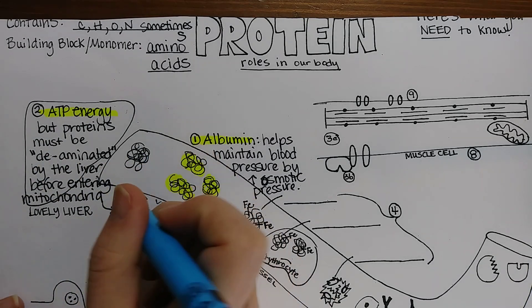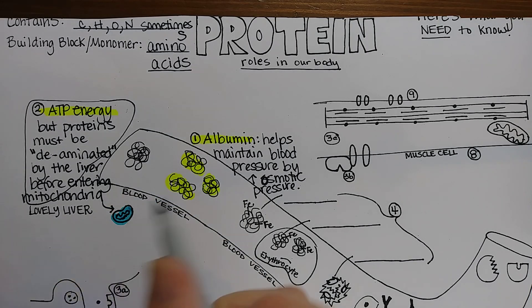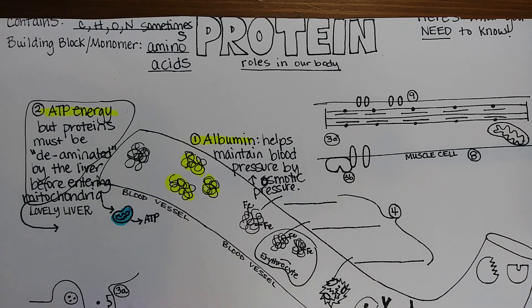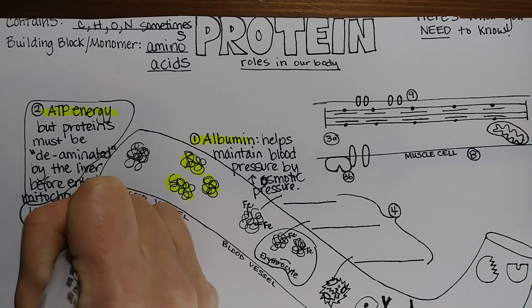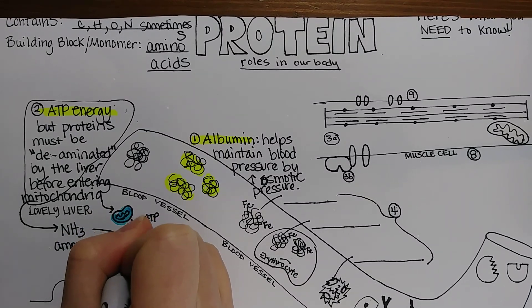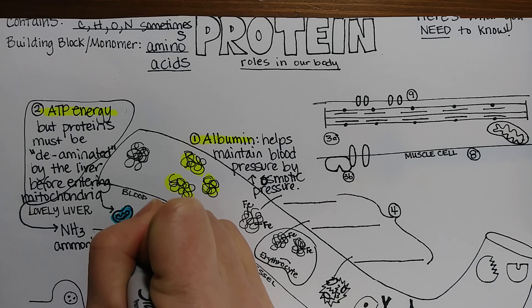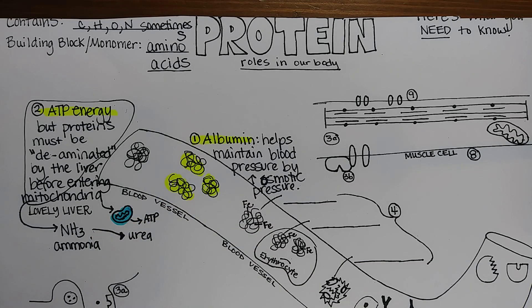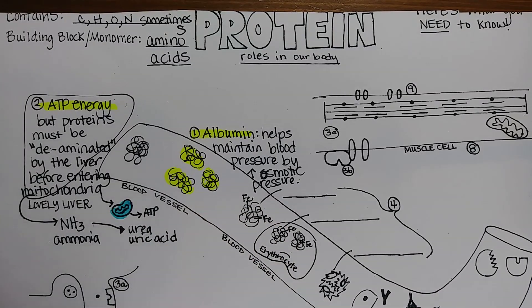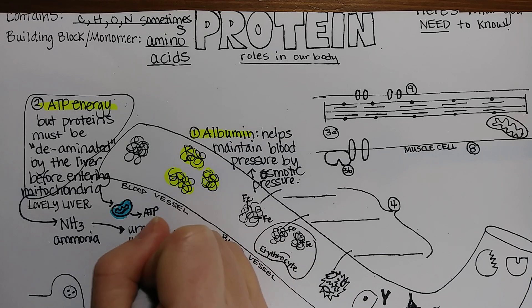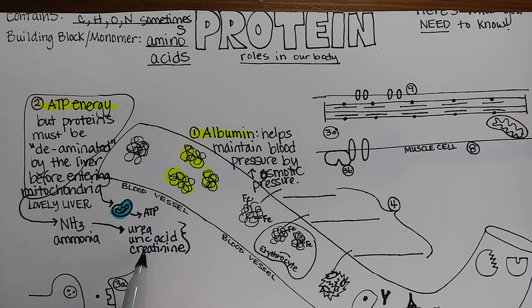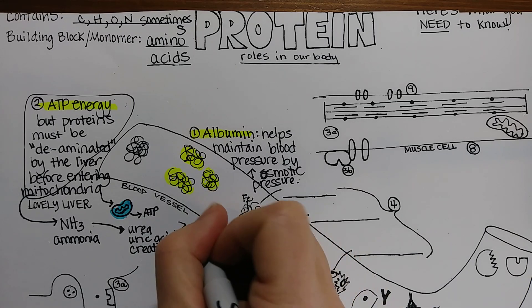The deaminated proteins go into the mitochondria, and from that ATP can be produced. The nitrogen that got taken off is in the form of ammonia, and this ammonia is toxic if it builds up in our blood. So the liver does some major enzymatic acrobatics to convert that ammonia into urea, which is a bigger molecule that contains the nitrogen. In birds, more of it is converted into uric acid, which is a solid — and if someone has too much of it in their blood they can get gout. A third nitrogenous waste is called creatinine.